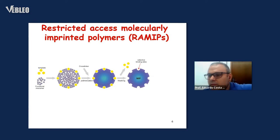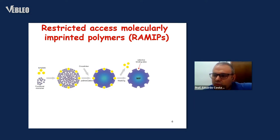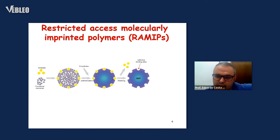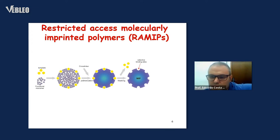The molecular imprinted polymers can be used for different sample preparation protocols, but we have some problems when these materials are put together with a biological sample, mainly due to the presence of proteins. The proteins from the sample can bind around the polymer surface, blocking the selective binding sites and causing several problems in terms of sensitivity and selectivity.